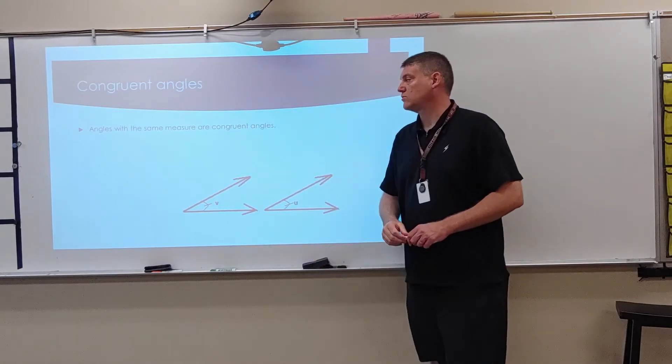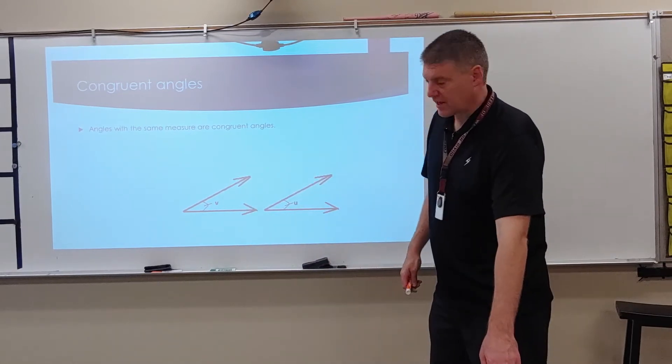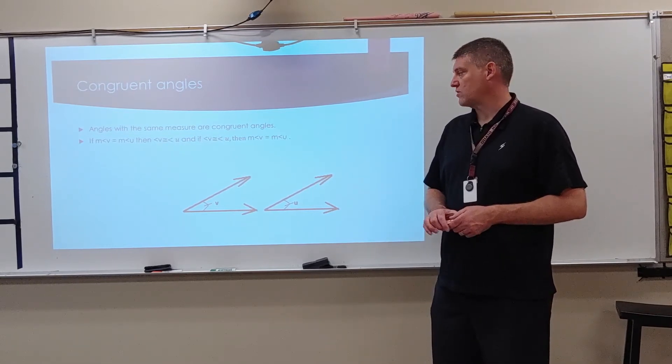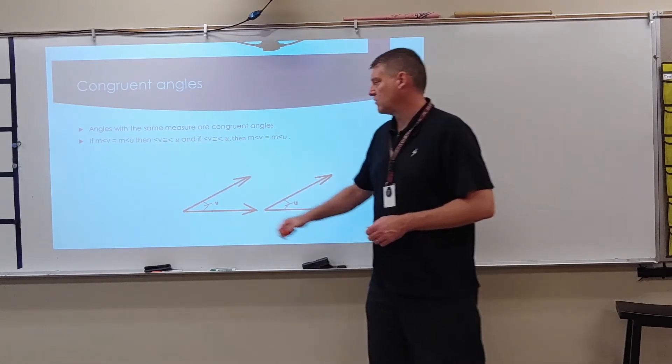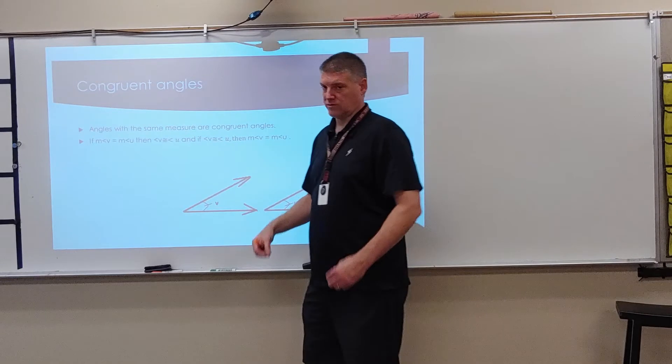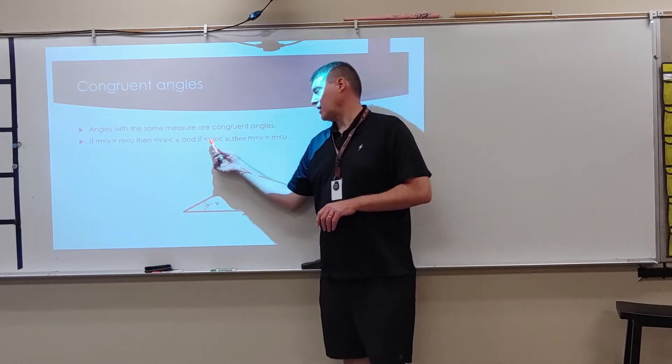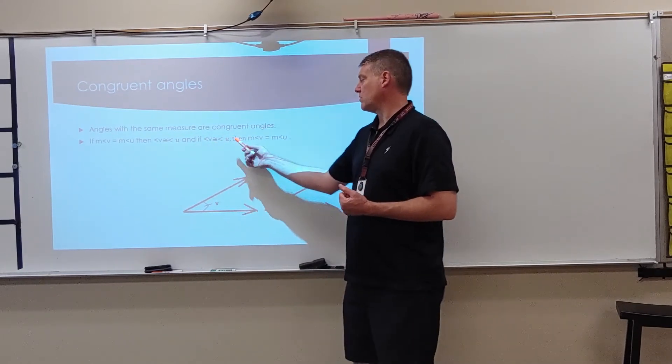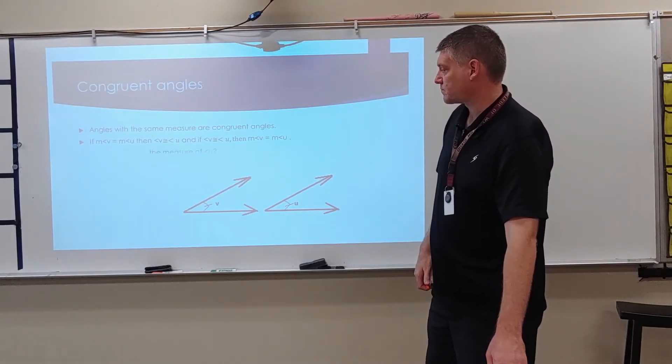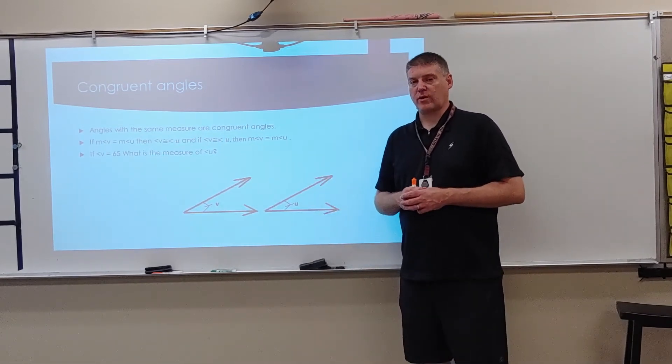Congruent angles. Angles with the same measurement are congruent. So these two right here are congruent angles. If angle V is congruent to the measure of angle U, then angle V is, I'm sorry. So if the measure of V equals the measure of U, so that's telling me that their numbers are the same, then angle V is congruent to angle U. And if angle V is congruent to angle U, then the measure of angle V is equal to the measure of angle U.